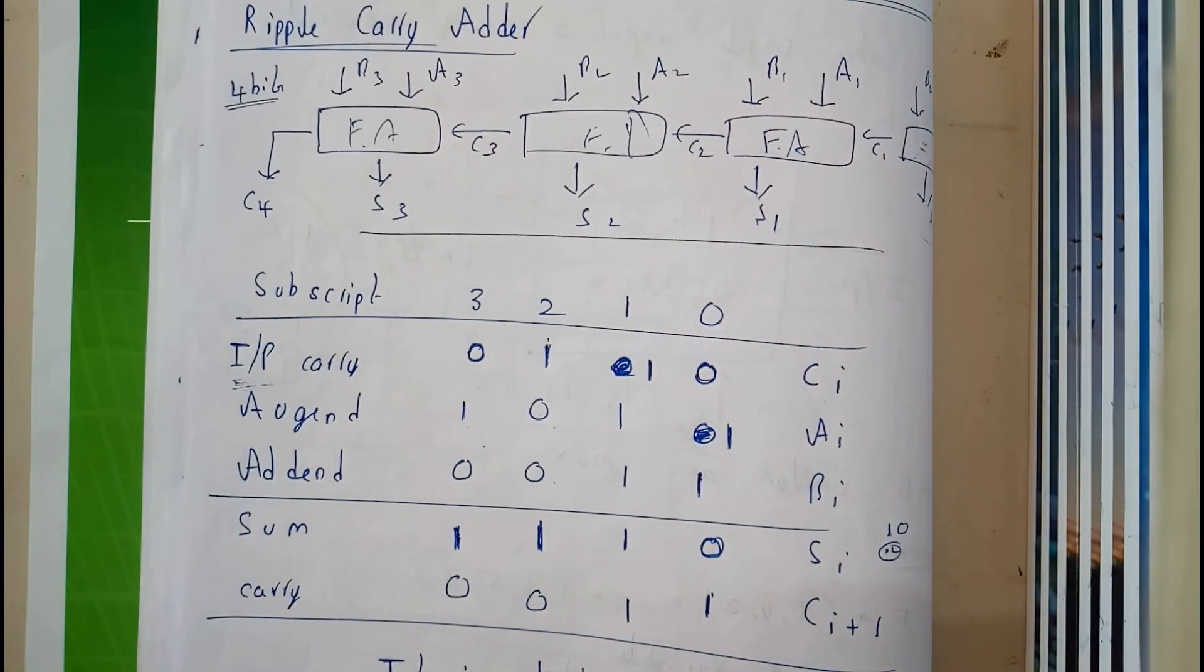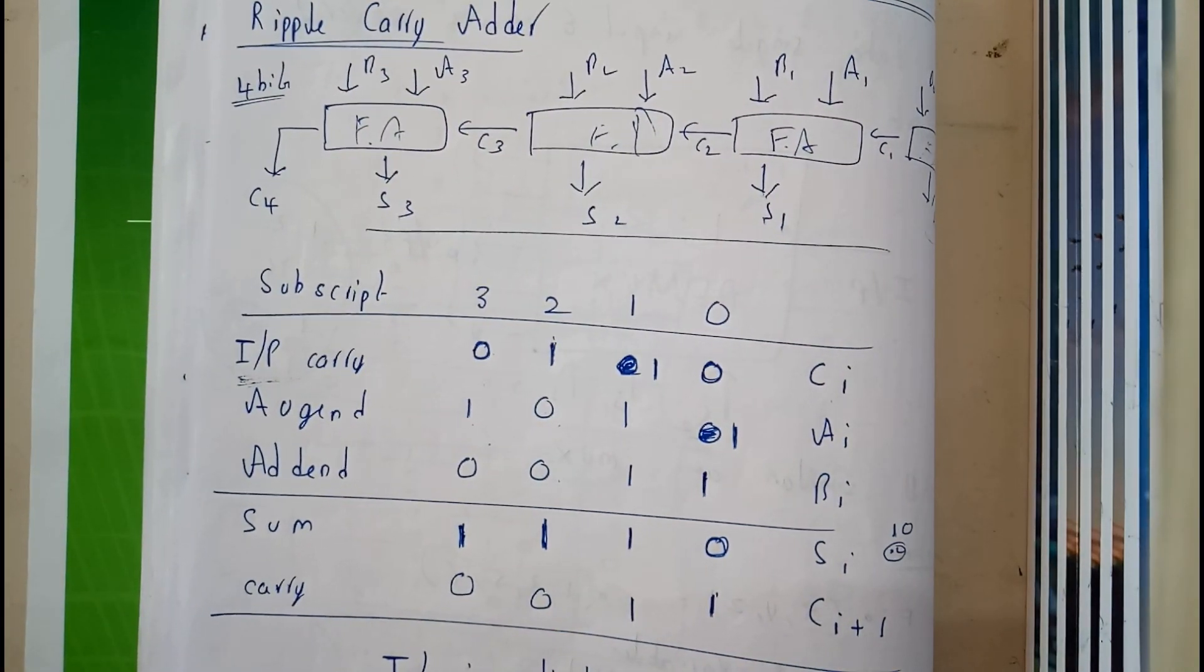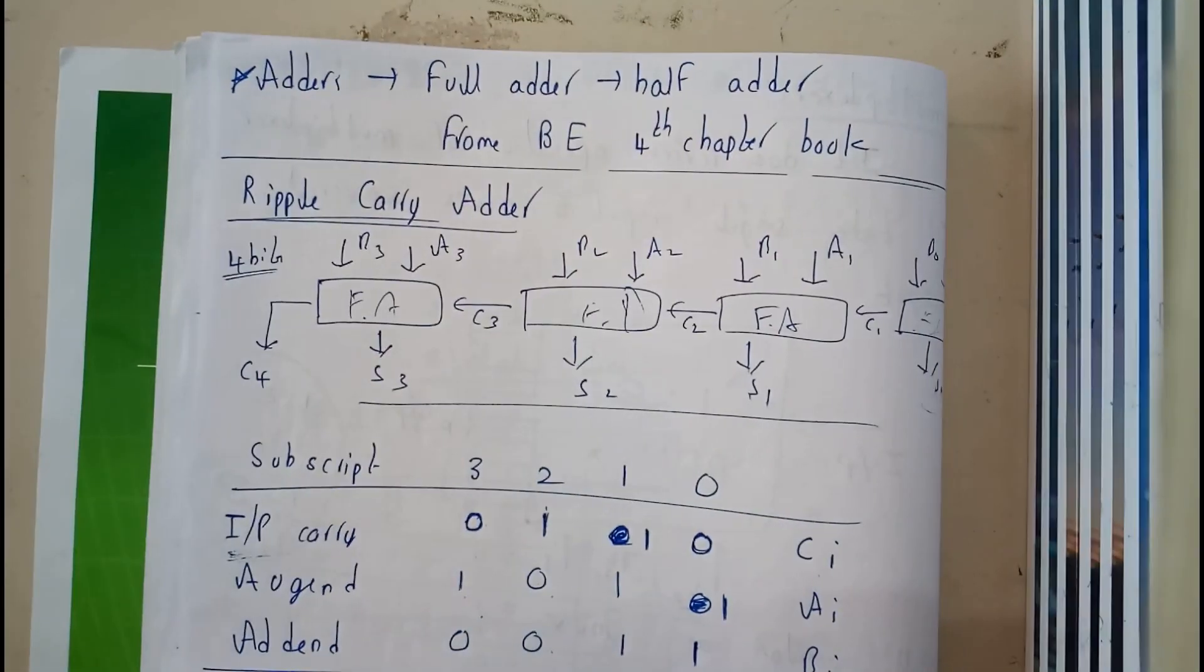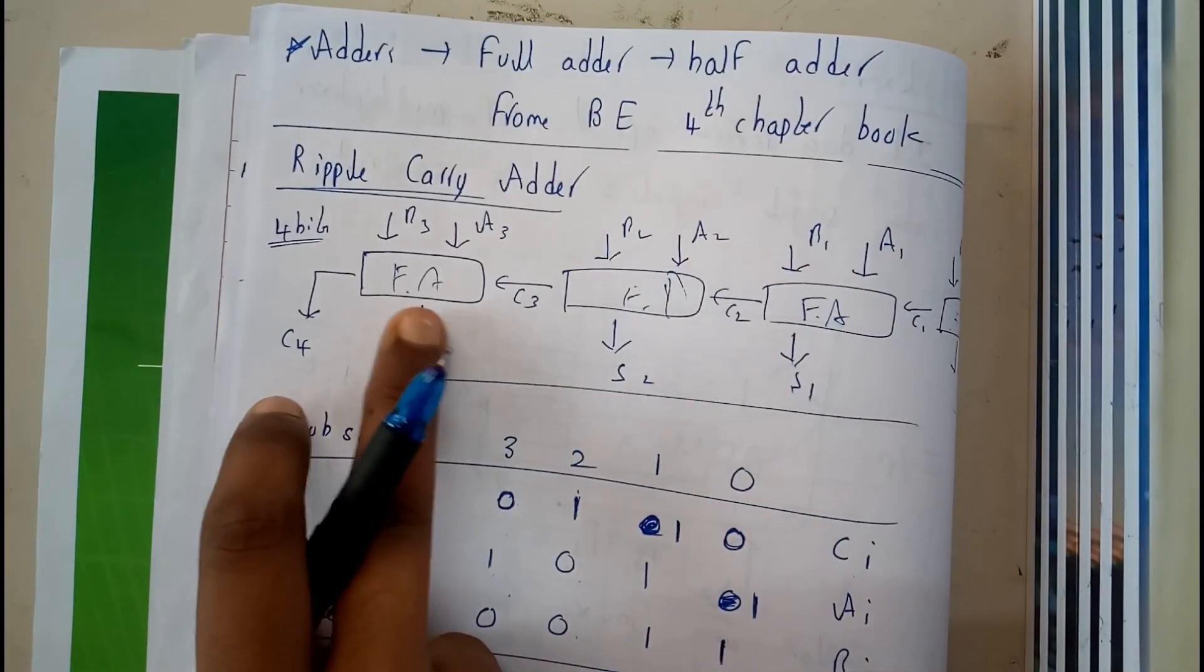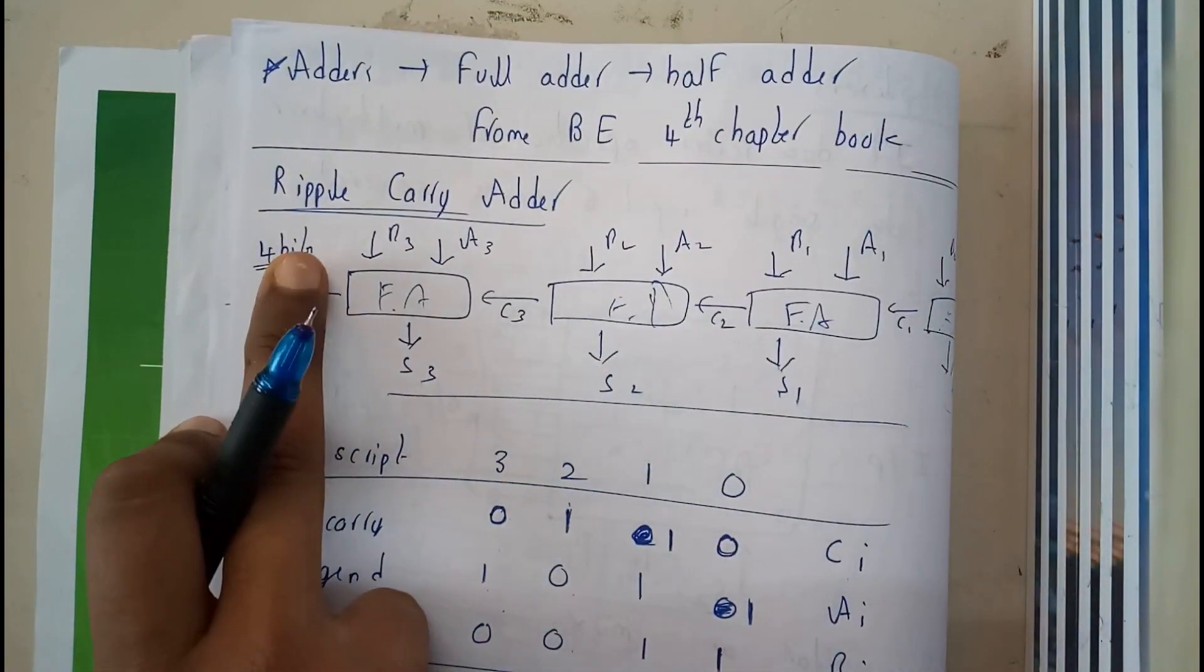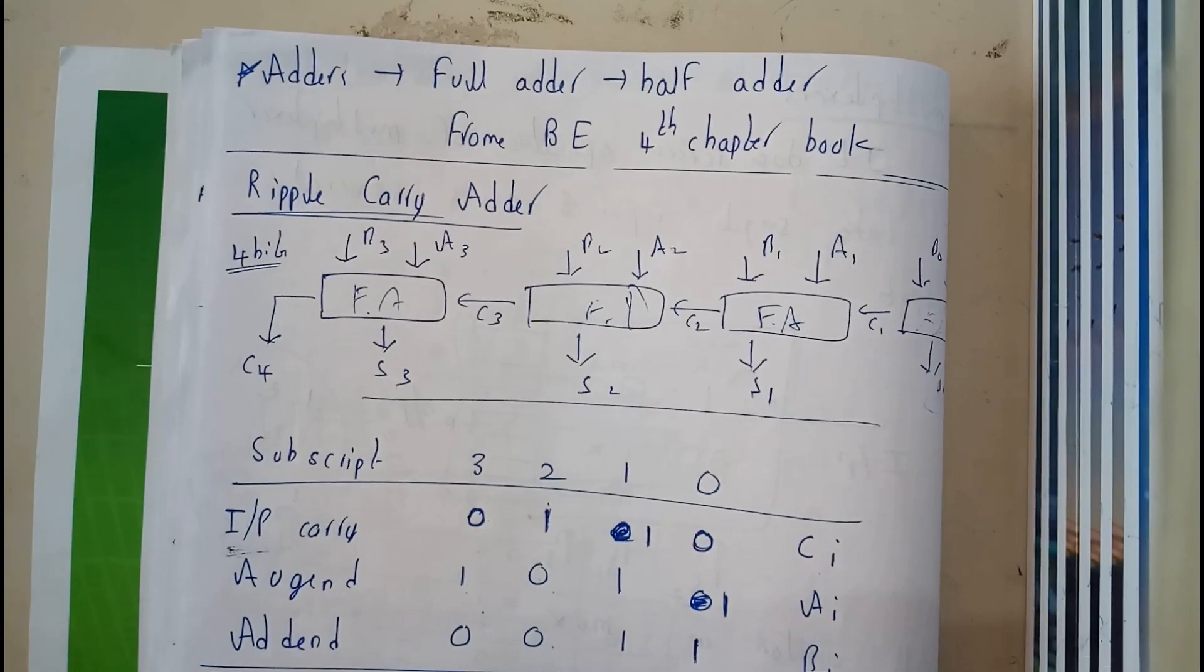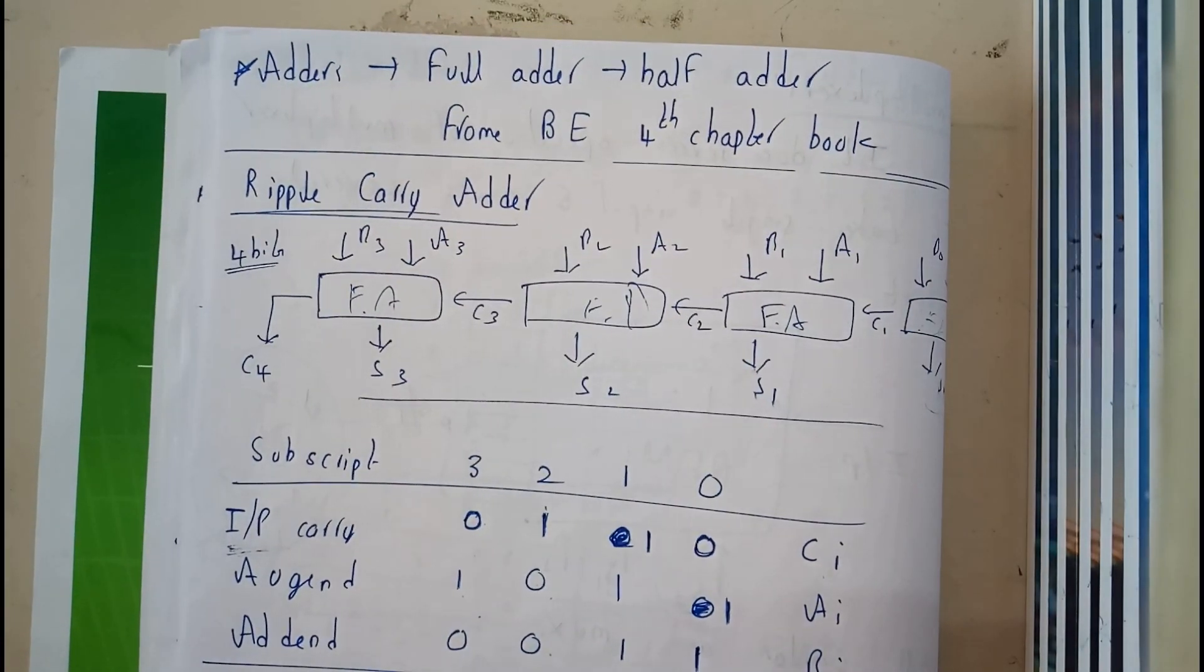So now I hope everyone is clear with ripple carry adder. The diagrams are really important, that's the most important thing you need to concentrate. I have just drawn the 4 bit, this is a 4 bit ripple carry adder. Thank you, thanks for watching. In the next video we will be going through subtractors.